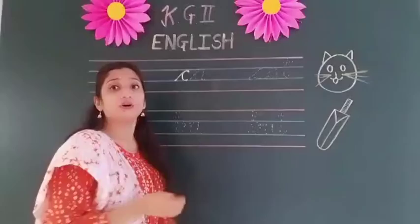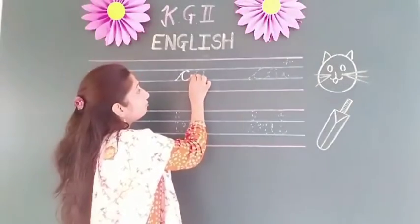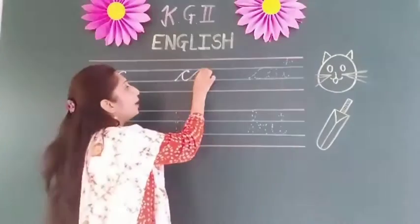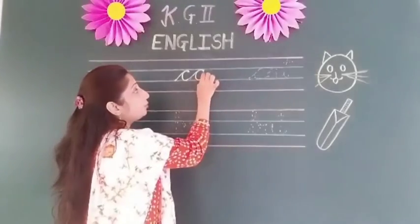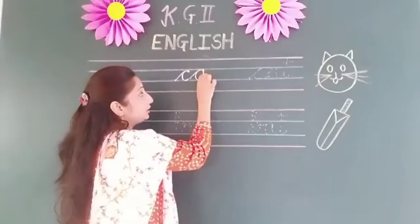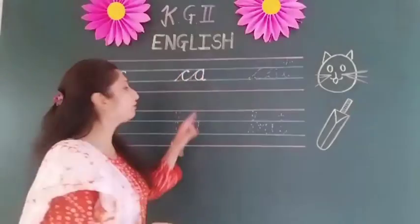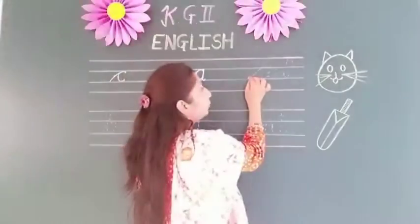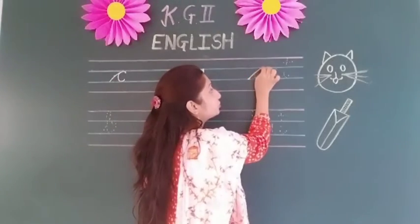Now we are adding one more letter. So go up to the first blue line, make a curve, go back to the second blue line, make a curve, go up to the first blue line, back to the second blue line, and make a small curve.